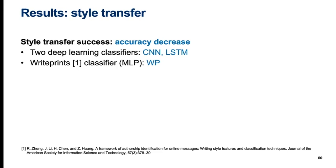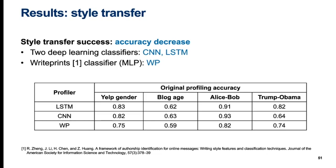For evaluating style transfer, we measured the accuracy decrease — that is, how much original accuracy went down after style transfer. We used two deep learning classifiers, a CNN and an LSTM, both of which use words as input features. The BT baseline and the ParChoice CNN variant query the CNN classifier, and the A4NT baseline and the ParChoice LSTM variant query the LSTM. We additionally used a multilayer perceptron classifier trained on the WritePrints features. Original accuracies on each dataset were the lowest for blog age and the highest for Alice-Bob. The two deep learning classifiers had the overall best profiling accuracy, except in Trump-Obama where LSTM clearly performed better.